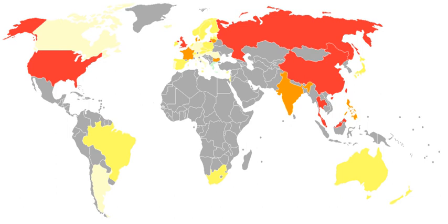Some believe that the Ninth Amendment declares that the fact that a right is not explicitly mentioned in the Constitution does not mean that the government can infringe on that right. The Supreme Court recognized the Fourteenth Amendment as providing a substantive due process right to privacy. This was first recognized by several Supreme Court justices in Griswold v. Connecticut, a 1965 decision protecting a married couple's rights to contraception. It was recognized again in 1973 in Roe v. Wade, which invoked the right to privacy to protect a woman's right to an abortion, and in 2003 with Lawrence v. Texas, which invoked the right to privacy regarding the sexual practices of same-sex couples.